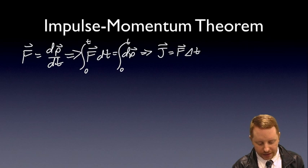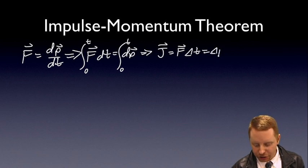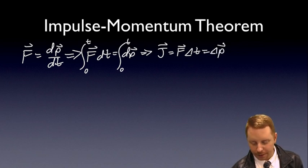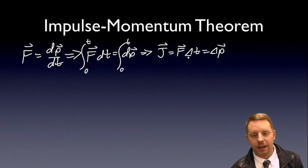And on the right-hand side, the integral of the differential of momentum across some time is just going to be that change in momentum, delta p. So what we've really shown is impulse is force times time, which is equal to the change in momentum of an object. Impulse changes momentum.